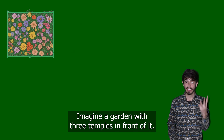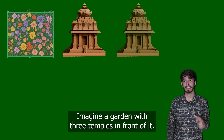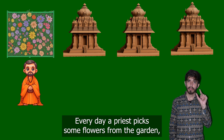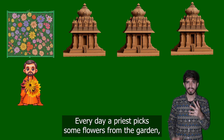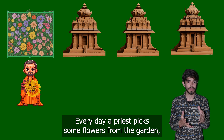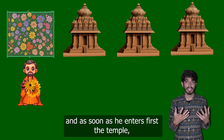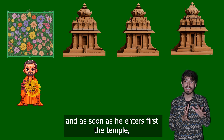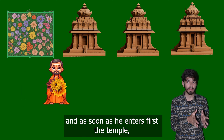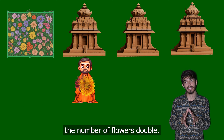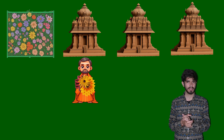Imagine a garden with three temples in front of it. Every day a priest picks some flowers from the garden, and as soon as he enters the first temple, the number of flowers doubles.